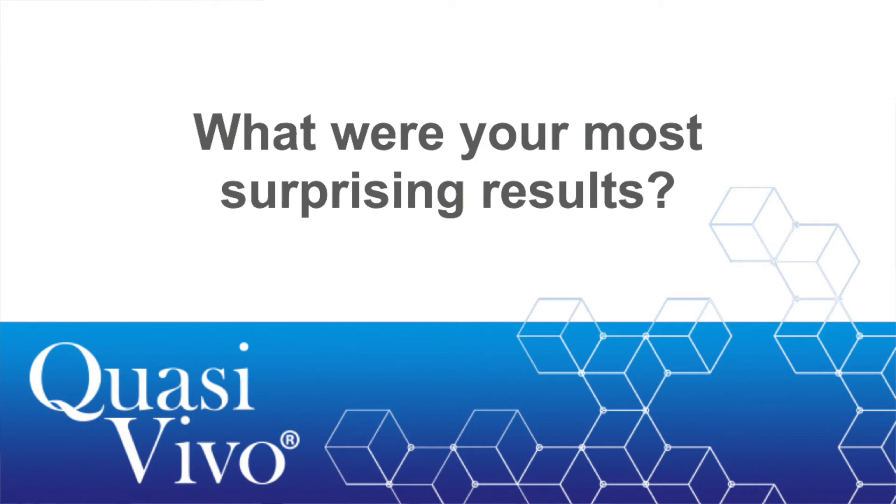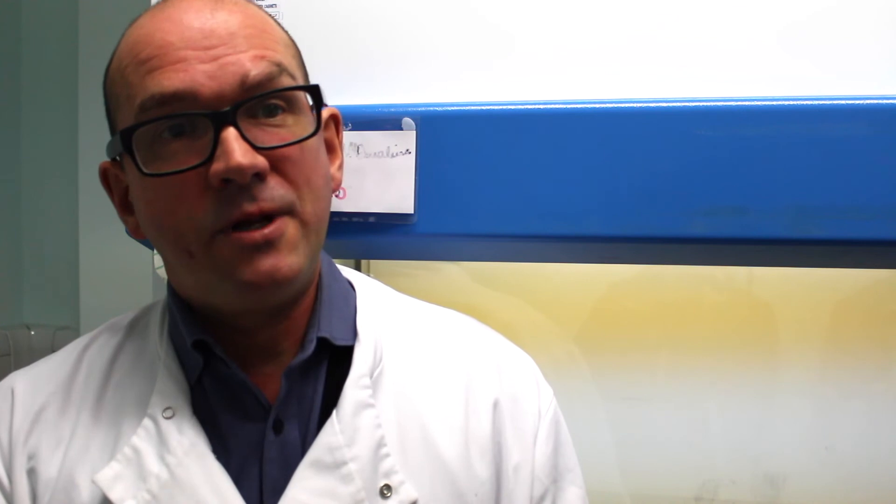The most surprising finding was that we can stimulate fibroblasts to differentiate into these activated myofibroblasts with flow. Traditionally that's always been done with a growth factor called transforming growth factor beta, which has been well described in the literature for a long time, so we use that as our positive control. We decided to add TGF-beta under flow conditions, and we found that that down-regulated the response.